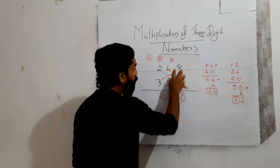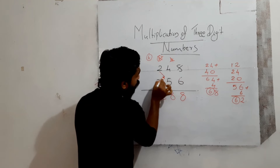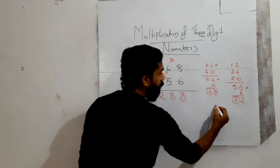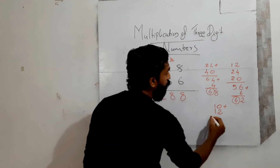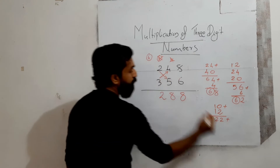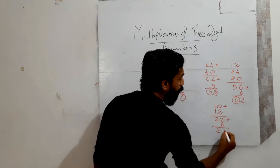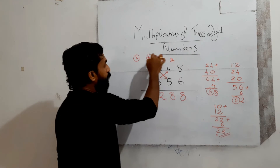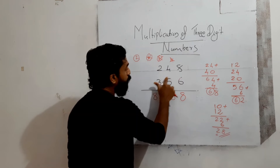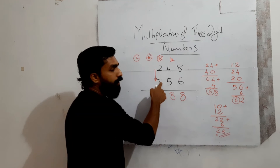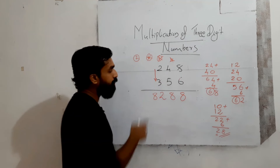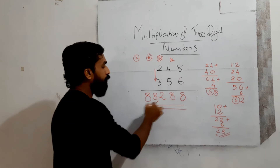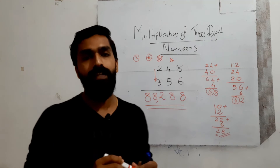Next: multiply the last two leading digits crossly. 2 into 3 is 6. Add carry of 2: 6 plus 2 equals 8. Write 8. So the answer is 88,288 — that is the product of 248 and 356. Practice this single-step method and you will get the idea.